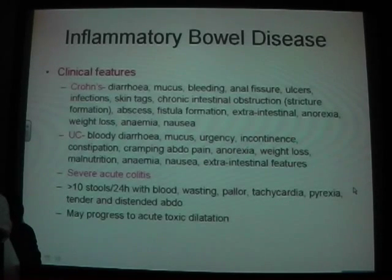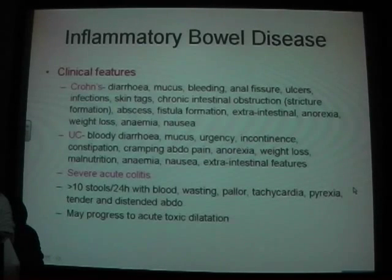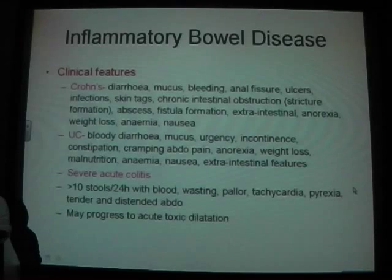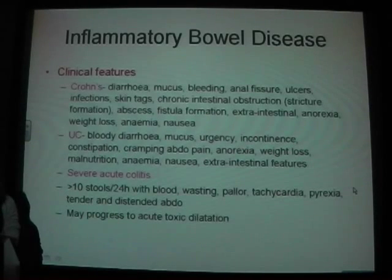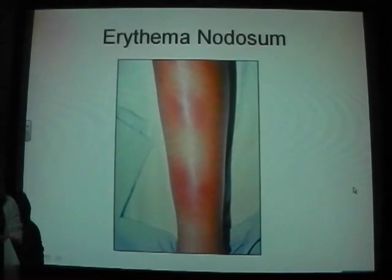Extra-intestinal features include pyoderma gangrenosum, arthritis, and erythema nodosum. In ulcerative colitis specifically: bloody diarrhoea, mucus, urgency, tenesmus, and weight loss. In severe acute colitis, you get very frequent stools — more than 10 a day — and the patient becomes very unwell with tachycardia and pyrexia, with a tender and distended abdomen, which may progress to acute toxic dilatation.